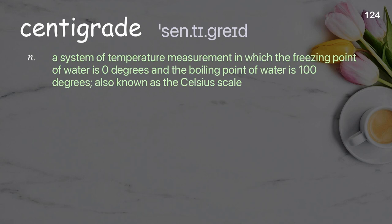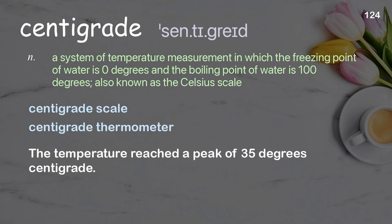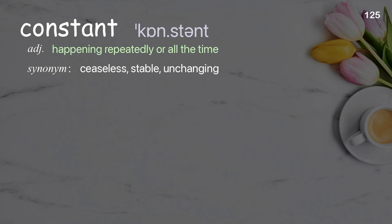Centigrade: A system of temperature measurement in which the freezing point of water is 0 degrees and the boiling point of water is 100 degrees, also known as the Celsius scale. Examples: centigrade scale, centigrade thermometer. The temperature reached a peak of 35 degrees centigrade.